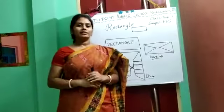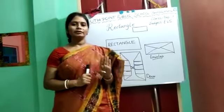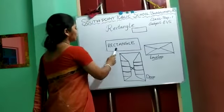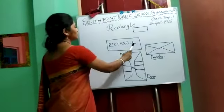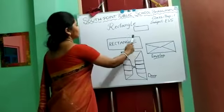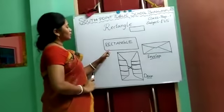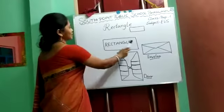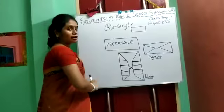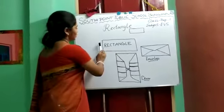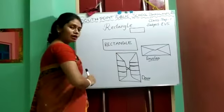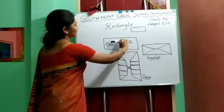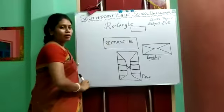Kids, a rectangle has 4 sides: 1, 2, 3, 4. Look kids, its 2 sides are short and 2 sides are long.